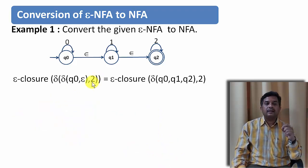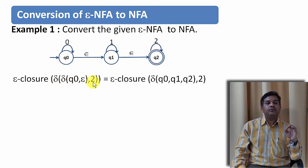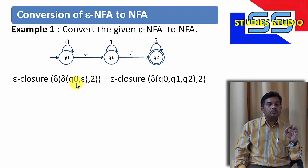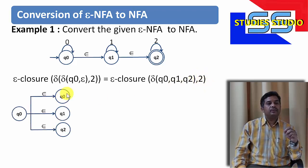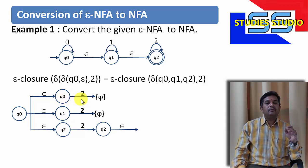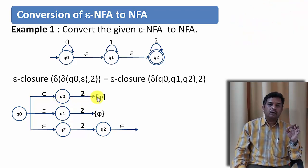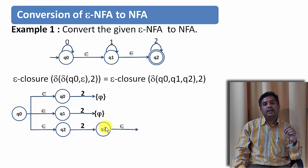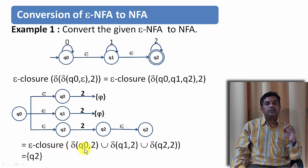Now we find the Epsilon closure on input symbol 2 at state Q0. The Epsilon move from Q0 gives Q0, Q1, and Q2. On input symbol 2: Q0 on 2 is undefined (phi), Q1 on 2 is undefined (phi), Q2 on 2 goes to Q2, and its Epsilon closure is Q2 itself. So taking the union, the Epsilon closure of delta(Q0, 2) = {Q2}.